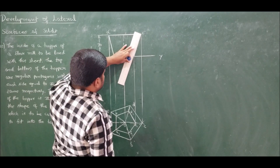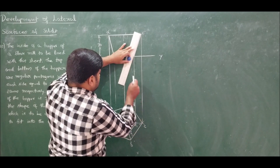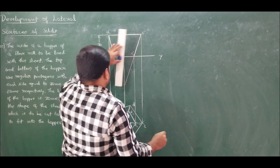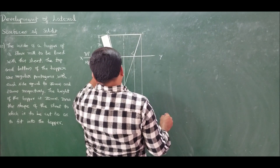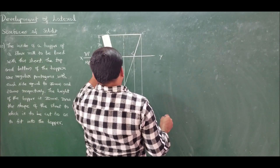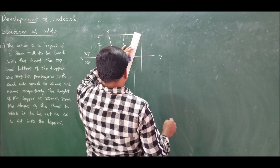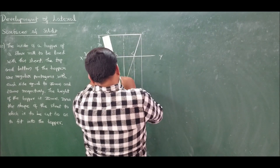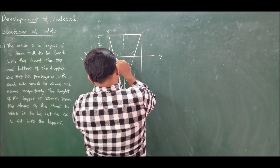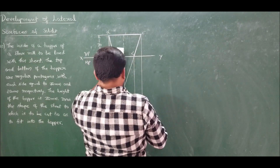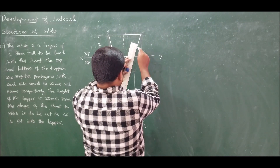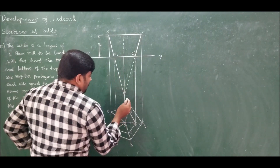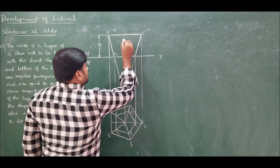To find the apex, extend the slant edge lines to intersect the axis. Extend C'C1' to intersect the axis, and extend E'A1' to intersect the axis as well. Once both extensions intersect the axis, you will get the apex — mark this apex as O' and the frustum apex as O1'.